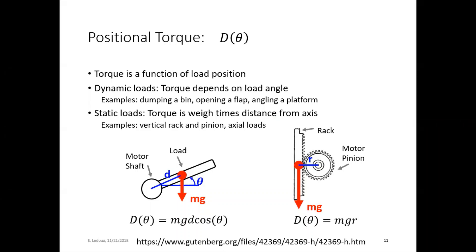Final term is the positional torque. So we call this D(θ). So D as a function of θ, not D times θ. Torque is a function of load position. For dynamic loads, the torque depends on the load angle. So if it's changing, if your motor angle is changing, and then the positional torque will depend on the angle.